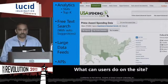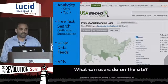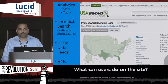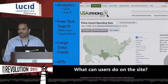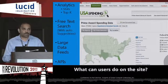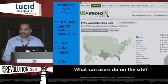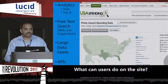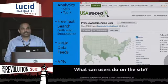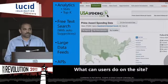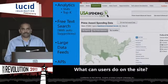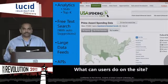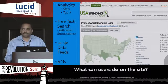What can users do on the site? Mainly analytics — look at how the government is spending, which department is spending how much money, which vendors are getting the top dollars and contracts, and what locations in the states or world are receiving what money and where work is being performed. There is also free text search if you are looking for a specific vendor, contract, or grant, plus an auto-suggest feature using Solr. Organizations or media can also request data feeds — they can download the complete data set or selectively download data for a specific vendor or department.